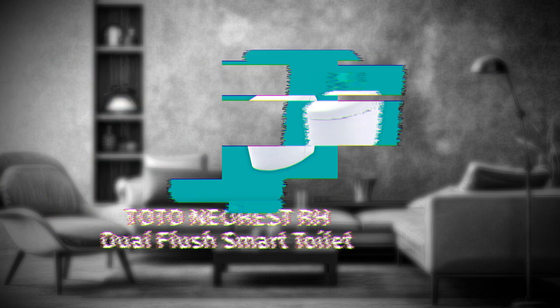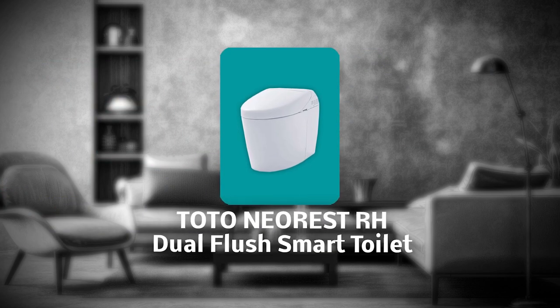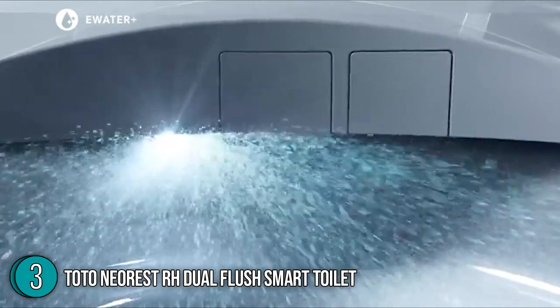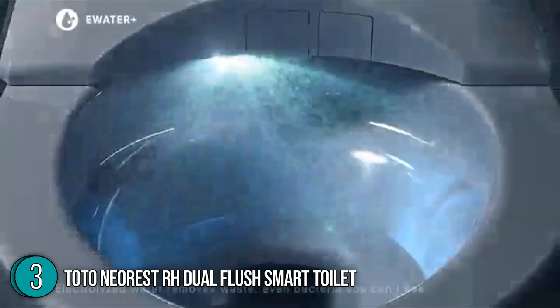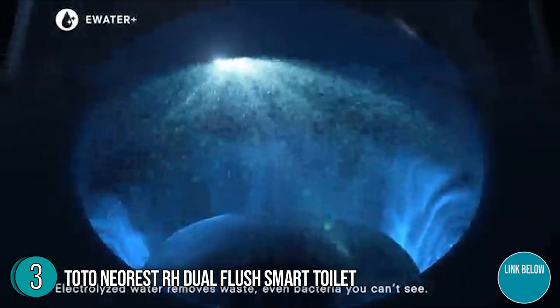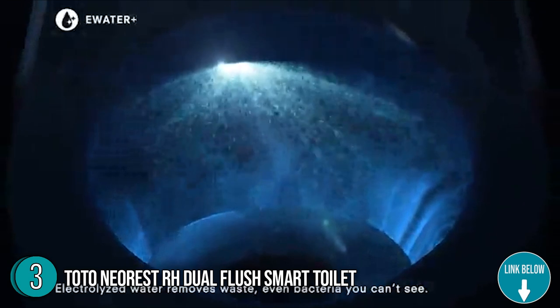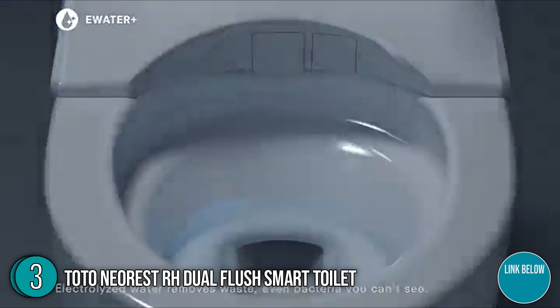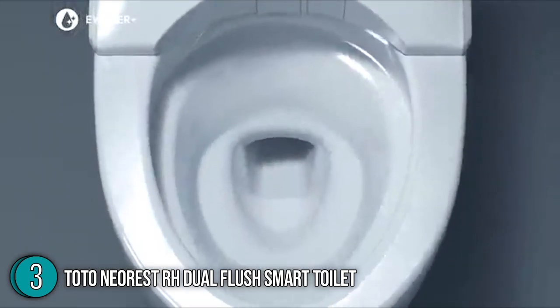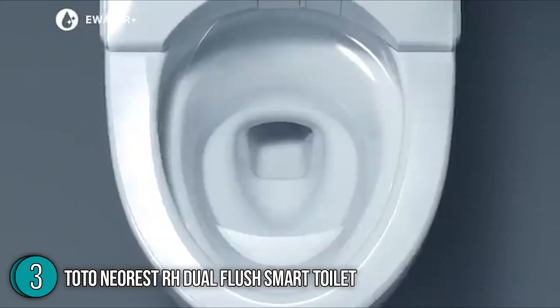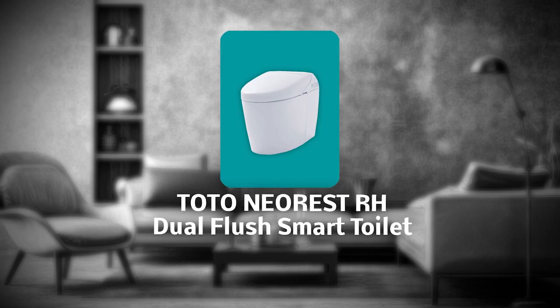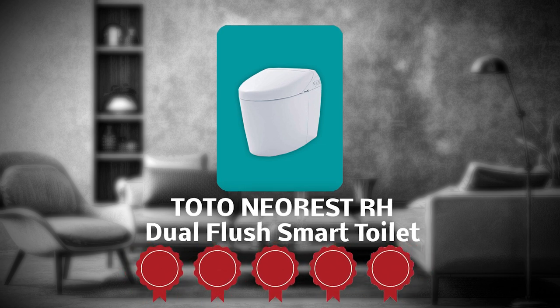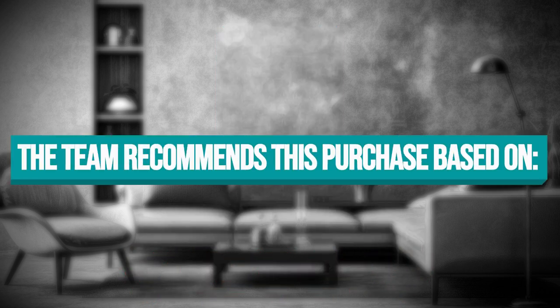The third best smart toilet on our list is the TOTO Neorest RH Dual Flush Smart Toilet. It's time to upgrade your bathroom. The TOTO Neorest RH Dual Flush Smart Toilet has arrived, and it's changing the game. With an energy-saving flush, customizable settings, and integrated washlet features, you'll never want to leave your throne again. As for its profile, this smart toilet measures 27.13 x 15.19 x 21.06 inches and weighs 98.7 pounds. TrustedShoppingGuide.com has awarded the TOTO Neorest RH Dual Flush Smart Toilet a 5 badge rating. The team recommends this purchase based on the following.